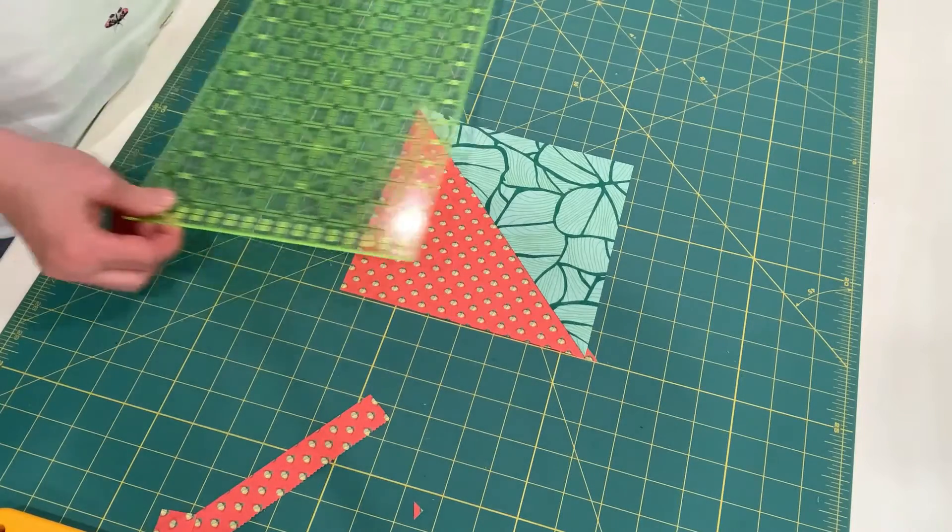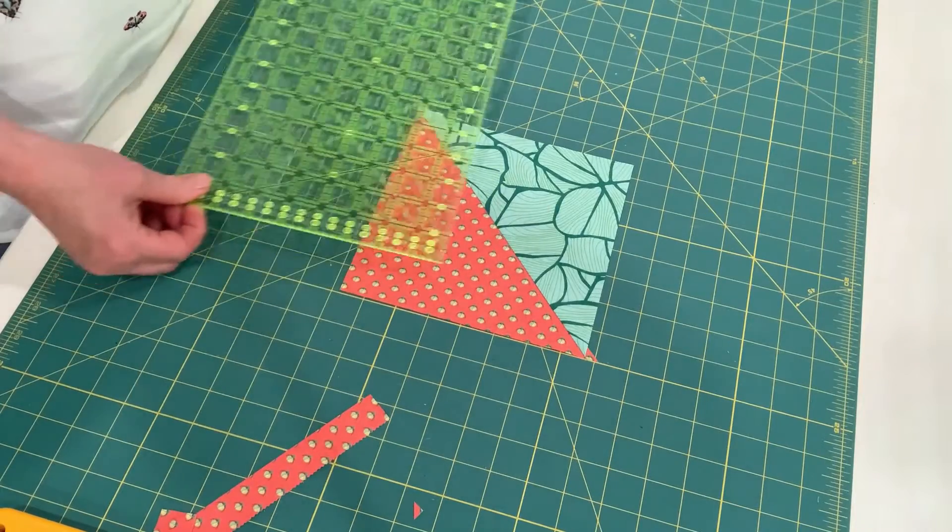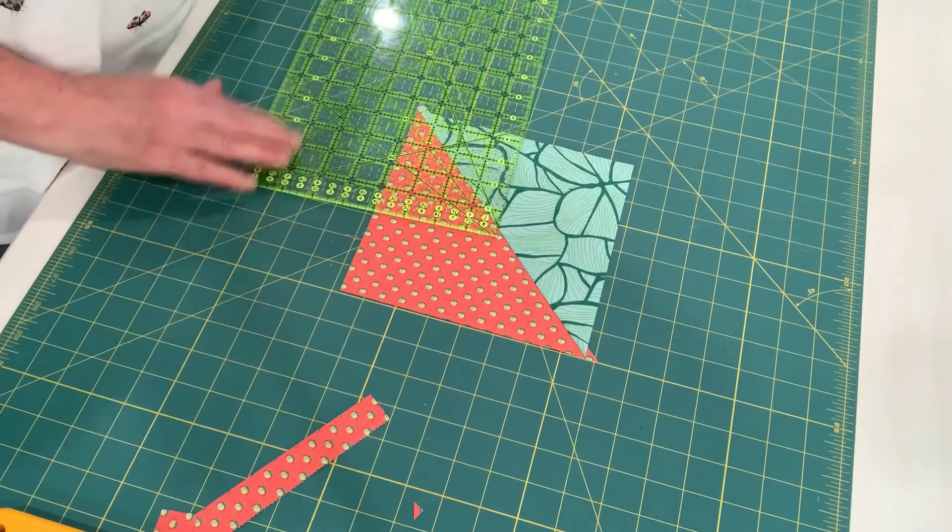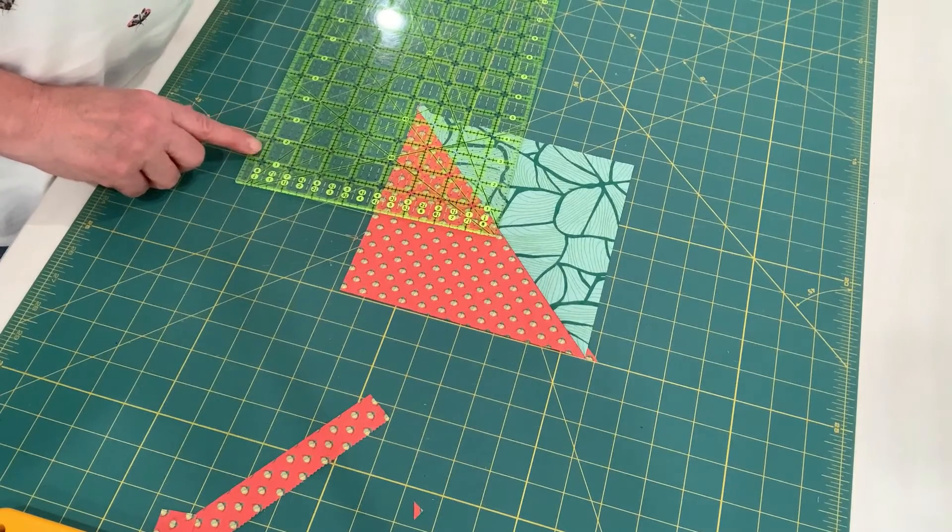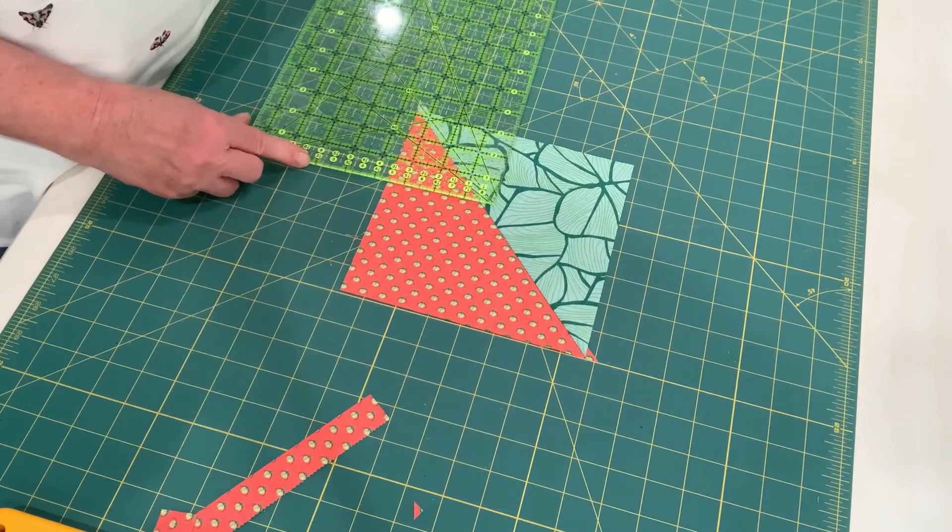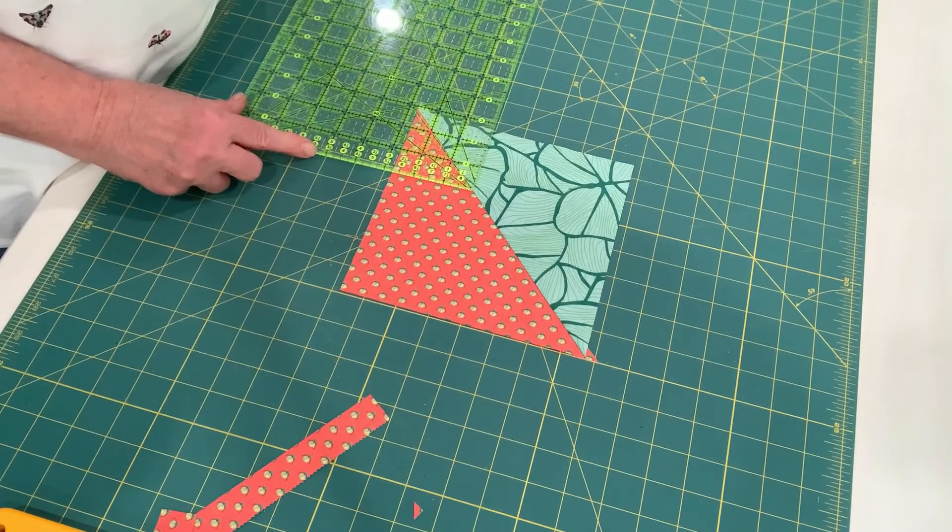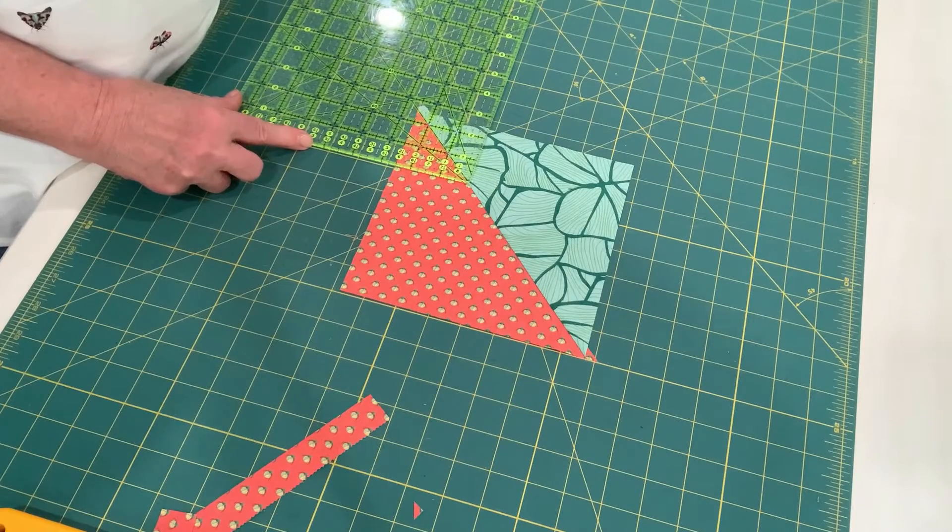And we can keep on going down and making it smaller and smaller, just to show you that you can use any ruler as long as the width of the ruler is at least the size of your block, and trim it down. So I could even go down and use my 45 degree angle to trim this down to a 2 1⁄2 inch square if I wanted to.